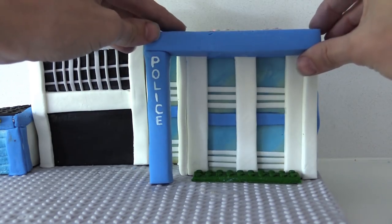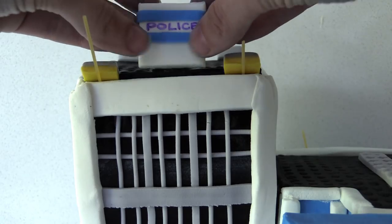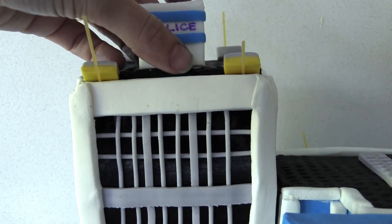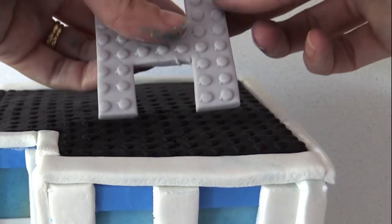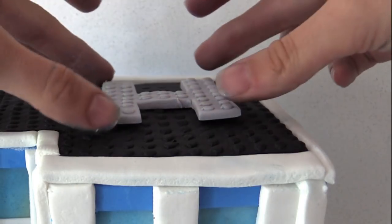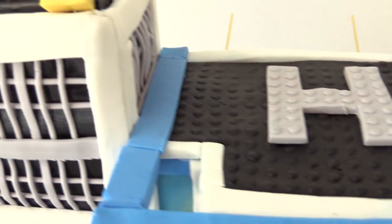Then you can remove that spaghetti later. Use an edible marker to write the word police on the police sign and add it to the top of the jail. Add some strips of blue and the helipad to the top of the police station and the cylinder of white and red.